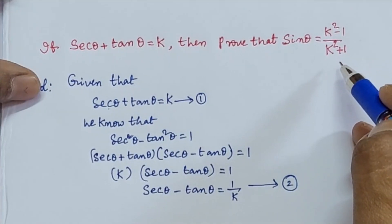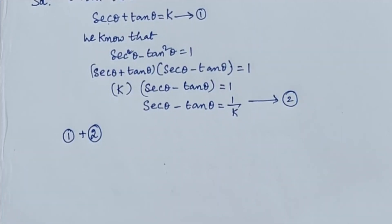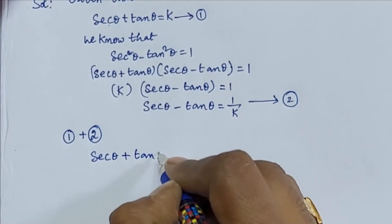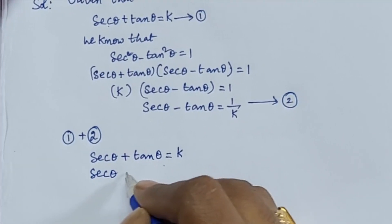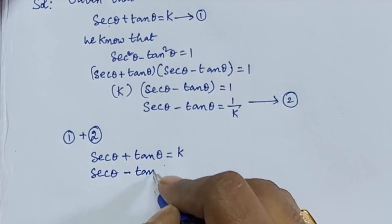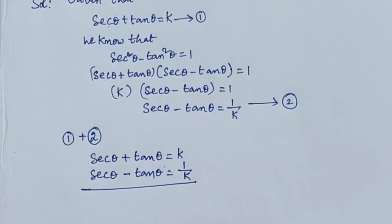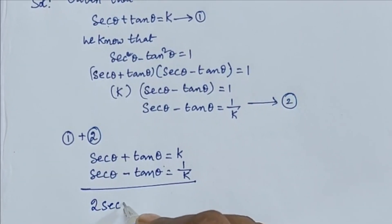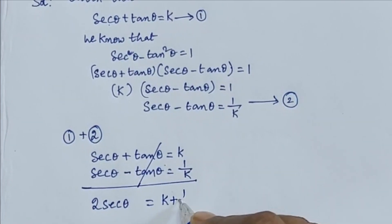To get sin theta, first add both equations: equation 1 plus equation 2. Equation 1 is secant theta plus tan theta equals k, and equation 2 is secant theta minus tan theta equals 1 by k. Adding both equations, the tan theta terms cancel, giving 2 secant theta equals k plus 1 by k.